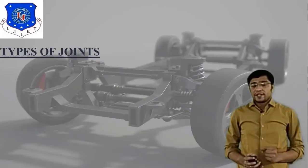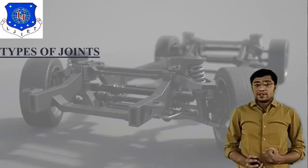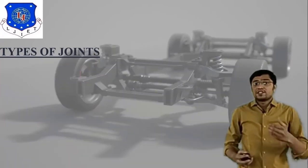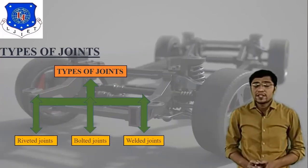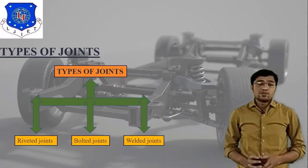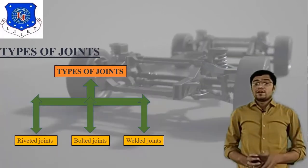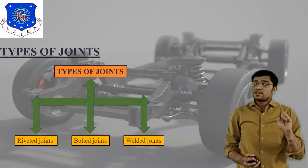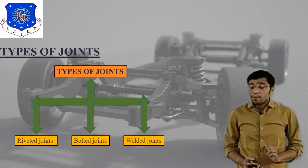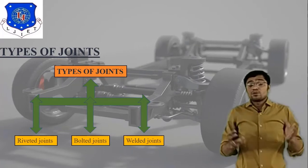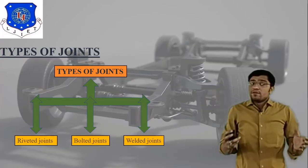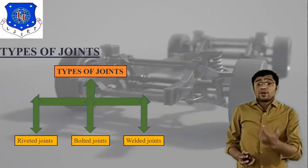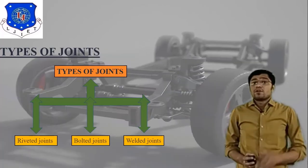First, types of joints. What do we understand about joints? Joining process is done to connect similar or dissimilar materials. I have attached three different types of joints which are very useful in automobile industry. First is rivet joint, second is bolted joint, and third is welded joint. Joining process is nothing but to connect similar or dissimilar material with heavy or light thickness. In automobile industry, these three joining processes are very useful.